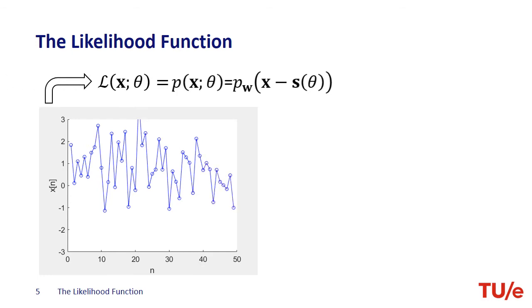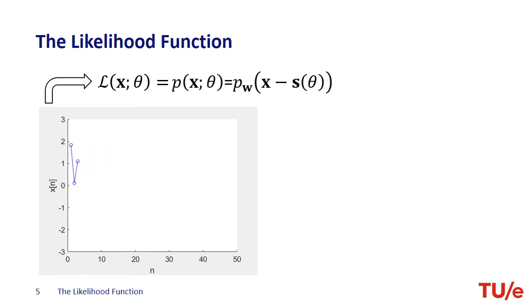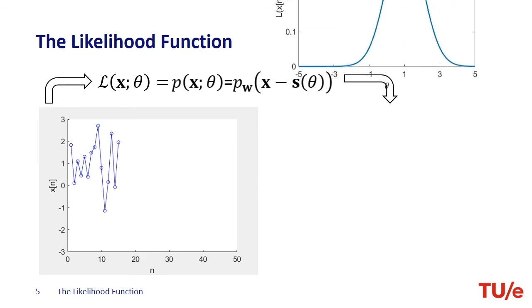As the name implies, this function gives the likelihood of getting the data x that we observed for different values of the variable theta. At this point, please note that the plot on the likelihood on the right-hand side still concerns a single sample. So, if we are given a single sample, we can calculate the likelihood of our data for different values of theta according to the plot on the right-hand side.